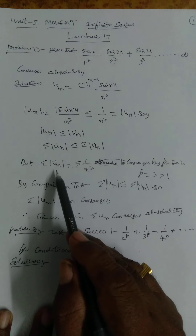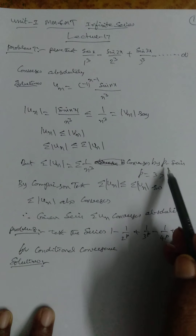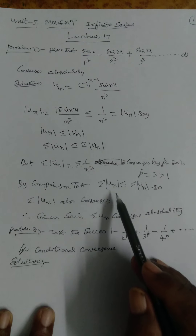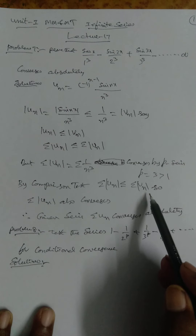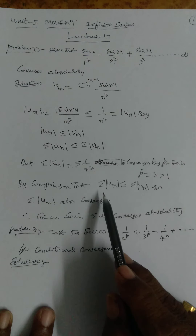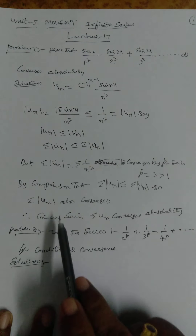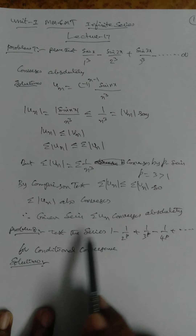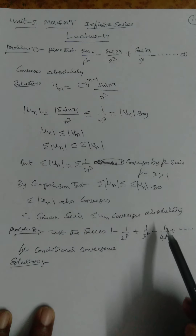But σ|v_n| = σ(1/n³), which converges by p-series with p = 3 > 1. By comparison, σ|u_n| ≤ σ|v_n|, and since σ|v_n| converges to a finite value, σ|u_n| also converges. Therefore the given series σu_n converges absolutely.